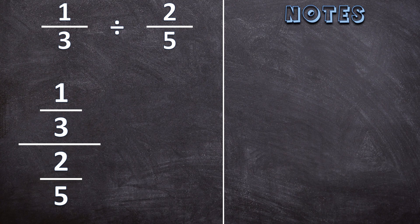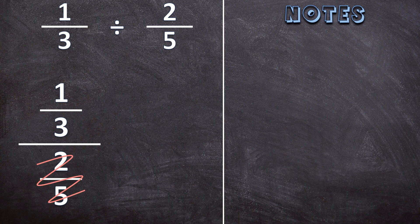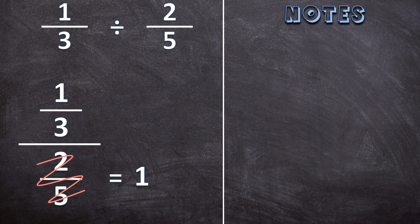The first thing we want to do is we want to make this easier. So we want to get rid of that 2 over 5 and we want to make that a 1. But we can't just scratch it out and make it a 1. There's a process we need to follow. But first, why do we want it to be a 1?